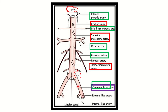We can see the anterior branches marked in the red box. First is the celiac trunk, below which is the superior mesenteric artery, and below that is the inferior mesenteric artery. So there are three anterior branches: celiac trunk, superior mesenteric artery, and inferior mesenteric artery.